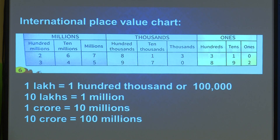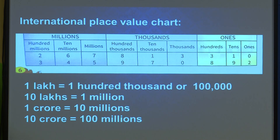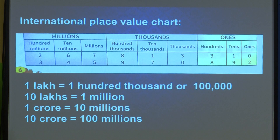In the international system, after every 3 digits you insert a comma. We start from the right: ones, then thousands, then millions. Under ones we have ones, tens, and hundreds. Under thousands we have thousands, ten thousands, and hundred thousands. Under millions we have millions, ten millions, and hundred millions.